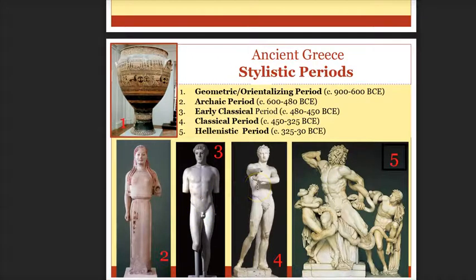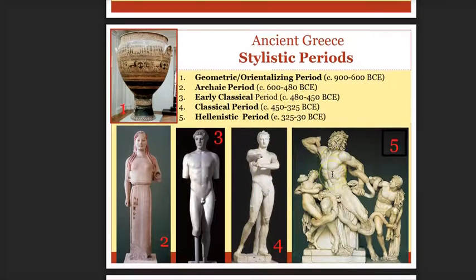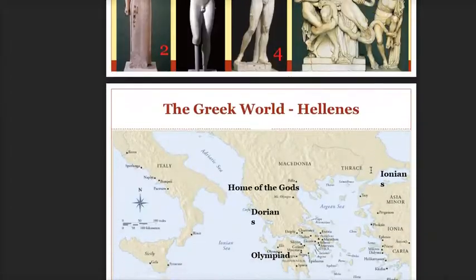When you go to the classical period, forms are definitely more natural, more modeling of the form, a shift in body weight, more sense of movement. Then in the Hellenistic period, the figures are over-the-top modeled, idealized muscles in action, very much dynamic action.